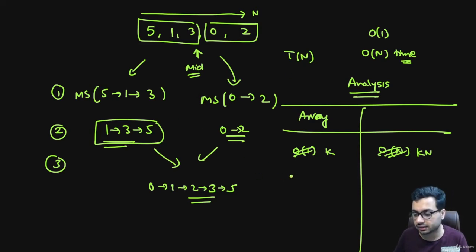Here also, two linked lists of size n/2, so it will take 2T(n/2) time. Then the final step is merge. Merging takes O(n) time, so I write it as kn. Here also merging takes O(n) time, so I write it as kn.